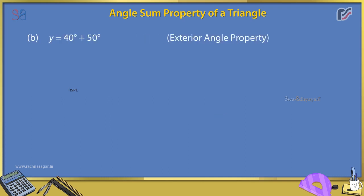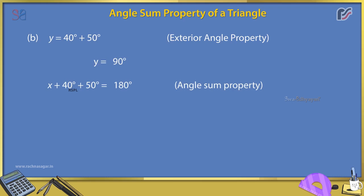Example 5, part B: Using exterior angle property, 40° + 50° = y, so y = 90°. Then using angle sum property, x + 40° + 50° = 180°, so x + 90° = 180°, giving x = 90°.